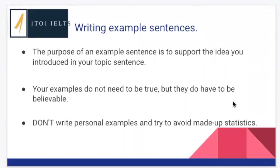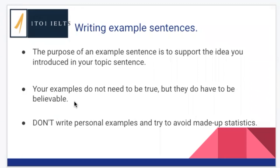We do not want extreme examples — any examples that involve lots of people dying, lots of people being kidnapped, all these very extreme examples I sometimes see. Essays are not academic examples, so don't try and have really extreme examples. We never want to write personal examples because it's simply not academic, and try avoiding using made-up statistics. You can use statistics, but your examples need to be believable, so if you make up statistics they've got to be believable statistics.